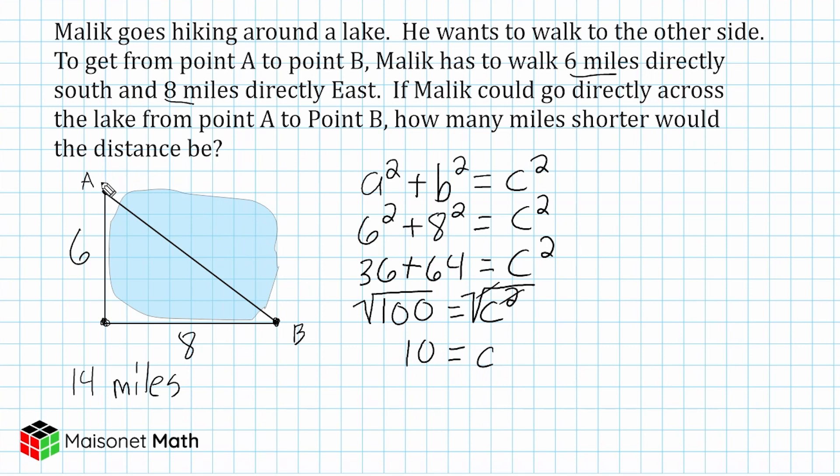So if Malik were to be able to go directly from point A to point B, that would be a distance of 10 miles. And 10 is four miles shorter than taking this route going south and then east. All you had to do is take 14 miles and subtract 10 miles from that, and that would give us four miles shorter.